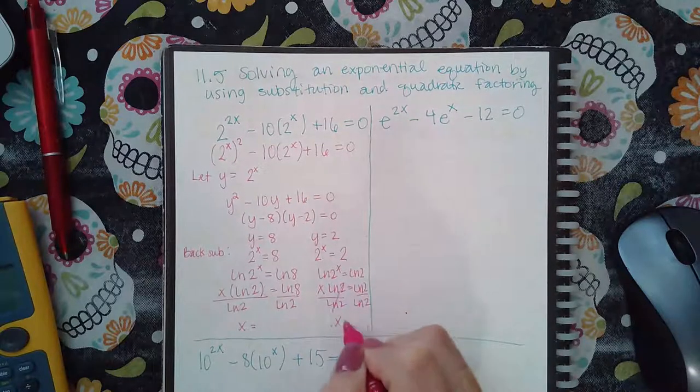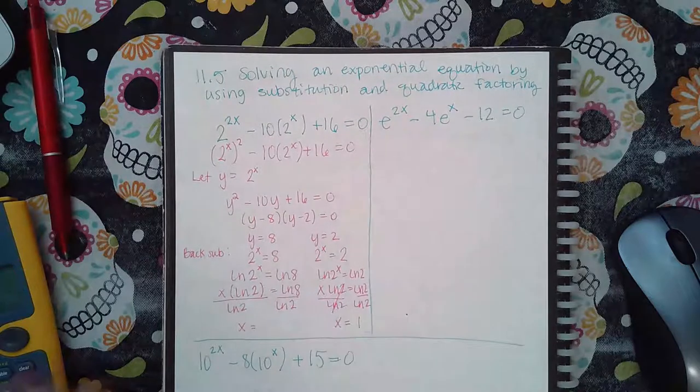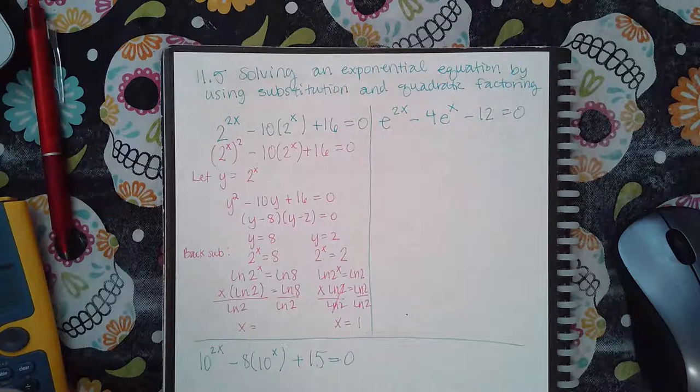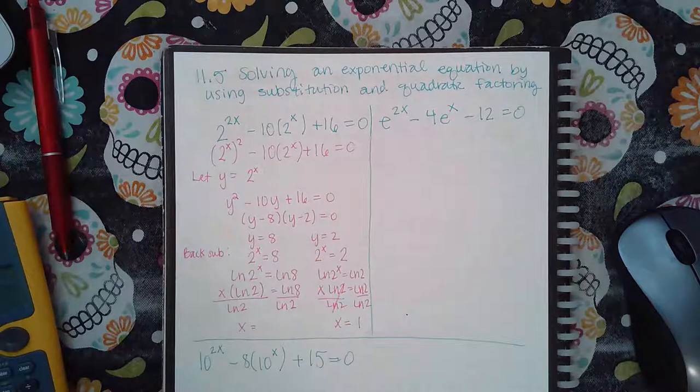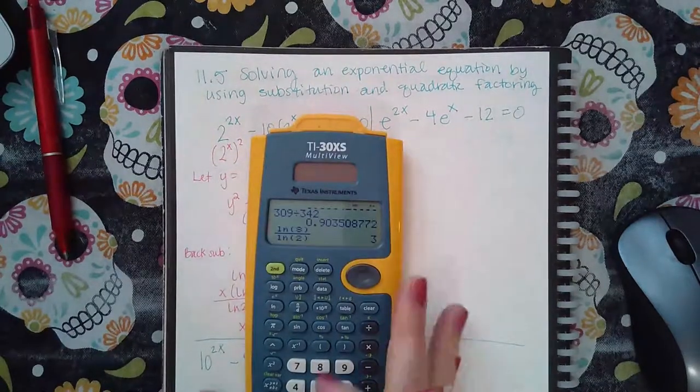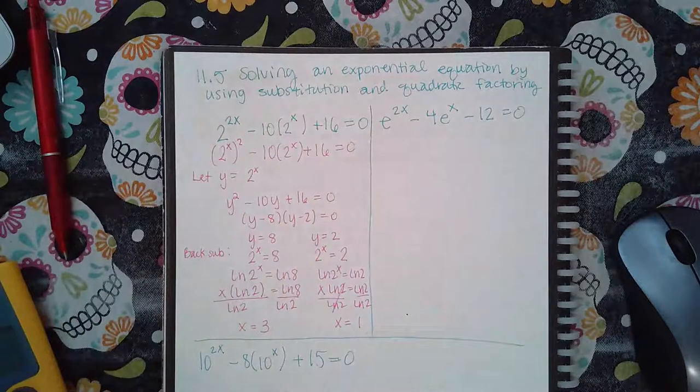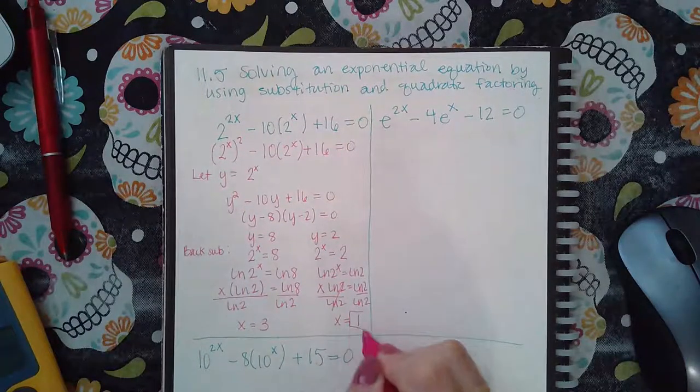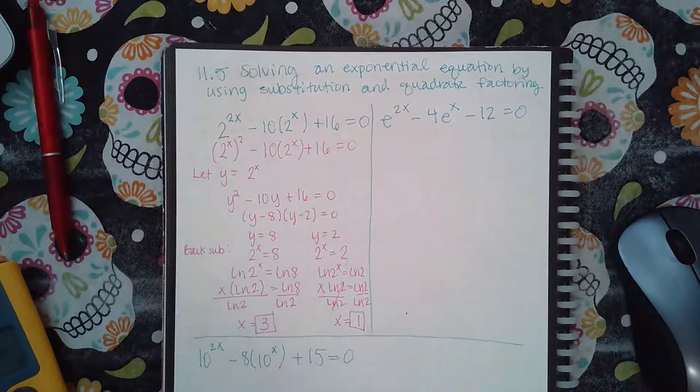Here, it happens to be the same, so I get x equal to 1. Over here, ln of 8 divided by ln of 2 is actually equal to 3 in my calculator. ln of 8 over ln of 2 is equal to 3. So I get two solutions, 1 and 3, that work here.